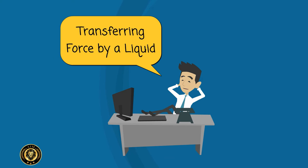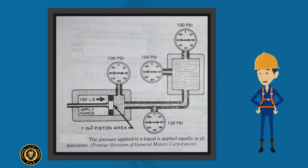Transferring force by a liquid: The force that is applied to a liquid is transmitted by the liquid in all directions to every part of the liquid. The piston in the figure has an area of 1 square inch which is 6.45 cubic centimeters. It is applying a force of 100 pounds that is 445 Newton.